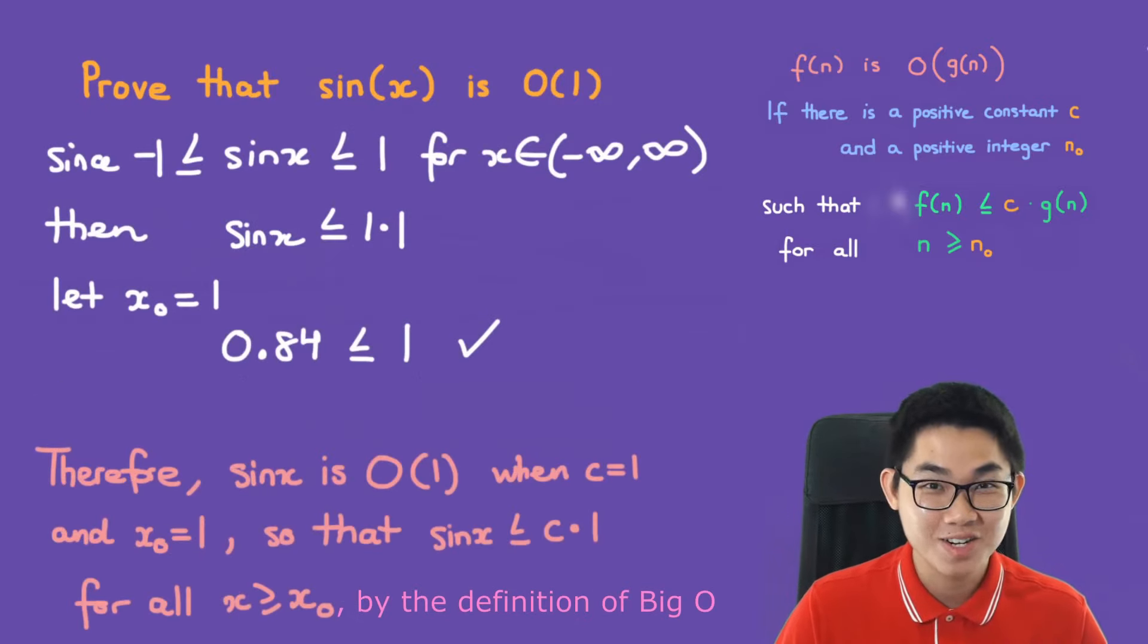And really, the last step is the conclusion. So therefore, sine of x is O(1) when c is equal to 1 and x naught equal to 1. So that the inequality sine of x is smaller or equal to c times 1, for all x is greater than or equal to x naught.